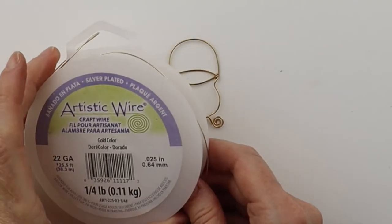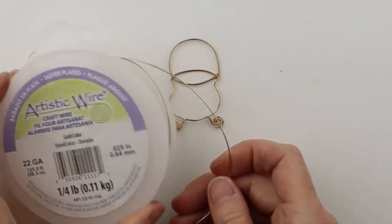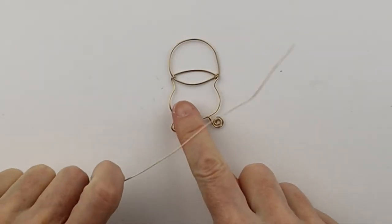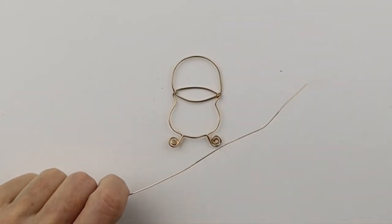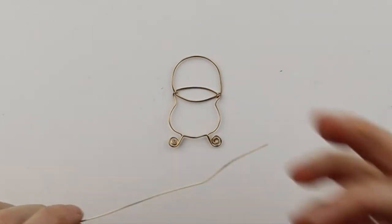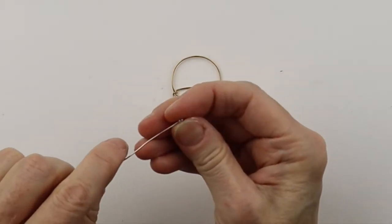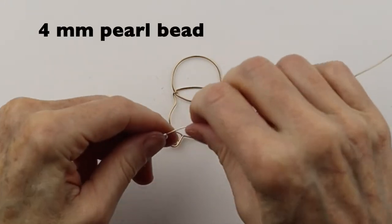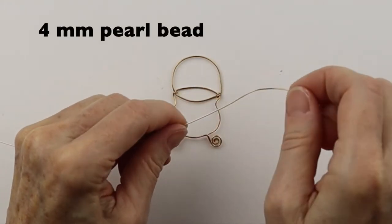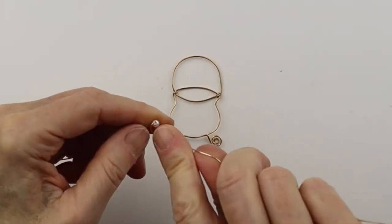So I have some 22 gauge wire. Then I'm going to add the beads. So I want to do like a row of beads across there to be like the surface. I'm going to take these pearls and put them in here and wind the wire around.